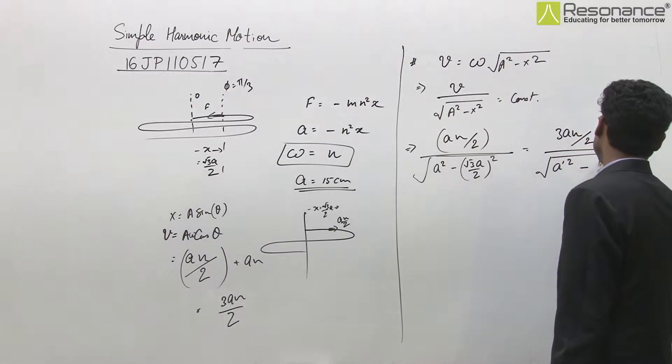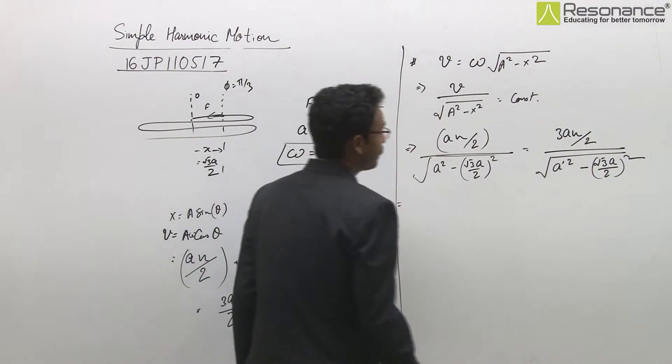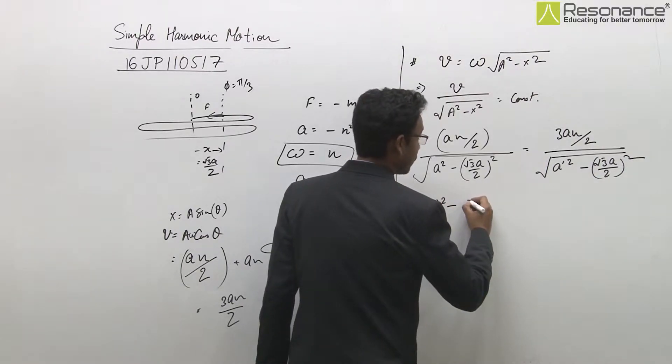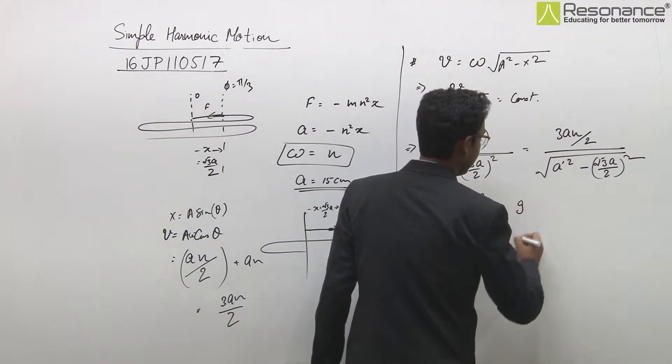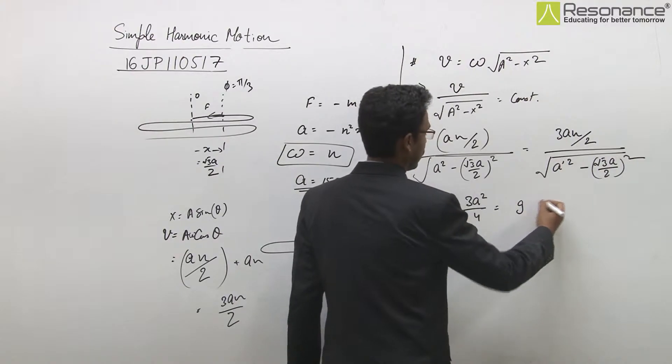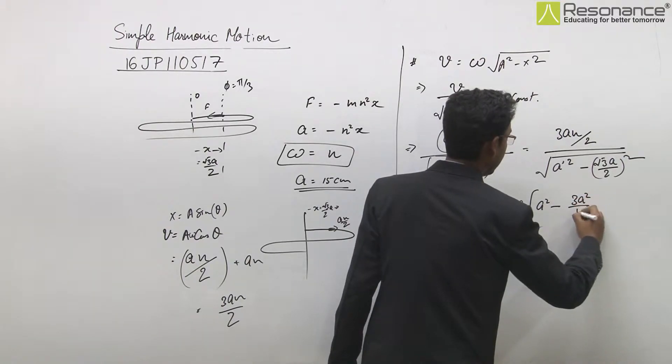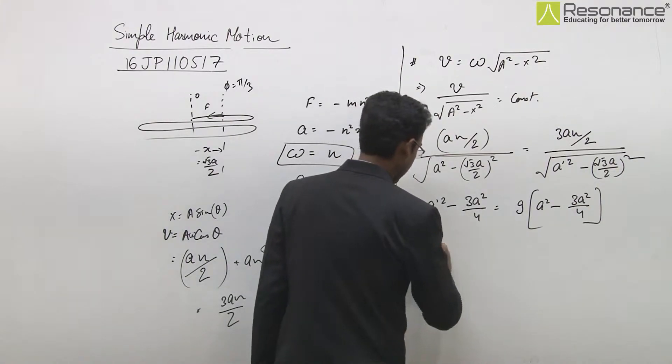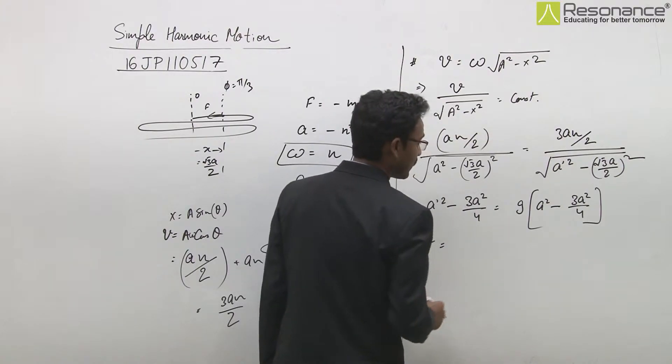Setting up: a² - (√3a/2)² compared with a'² - (√3a/2)². When we compare, a'² - 3a²/4 = 9a²/4, so a'² equals 9a²/4 plus 3a²/4.